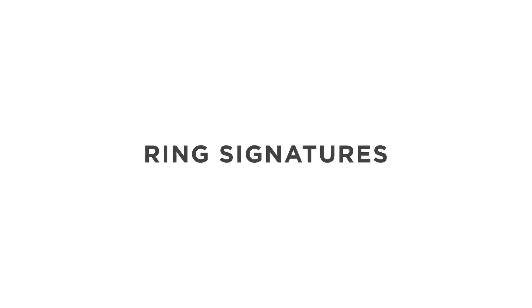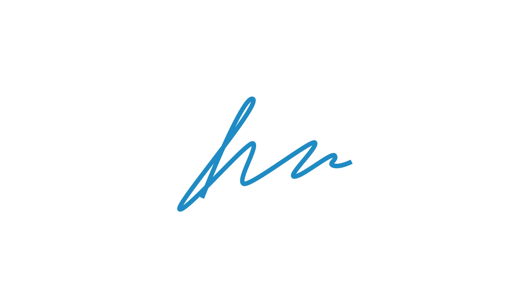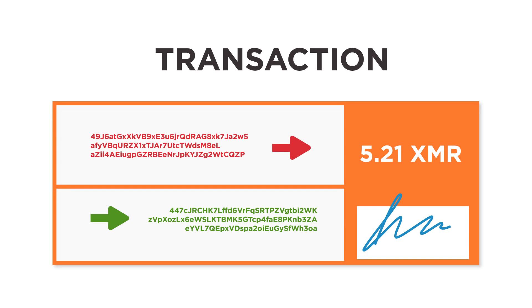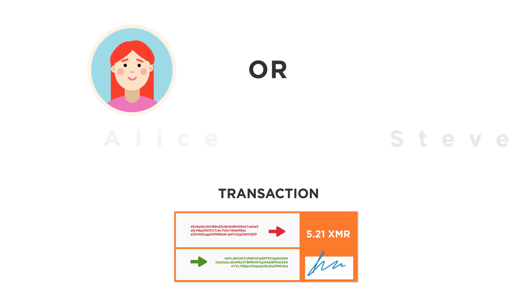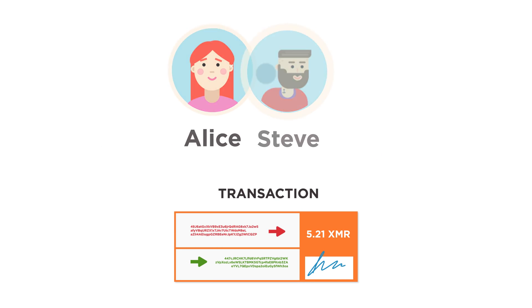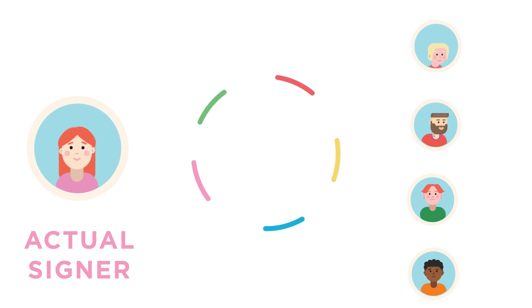On the input side of the transaction, the sender's privacy is protected with the use of ring signatures. A ring signature is a type of digital signature in which a group of possible signers are fused together to produce a distinctive signature that authorizes a transaction. This is analogous to the signing of a check from a joint bank account, but with the actual signer remaining unknown.